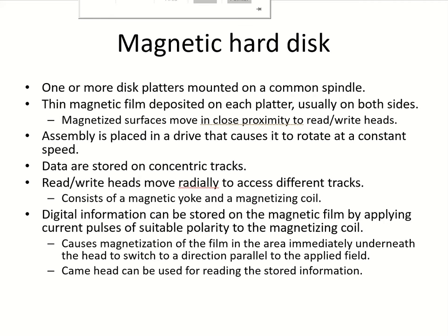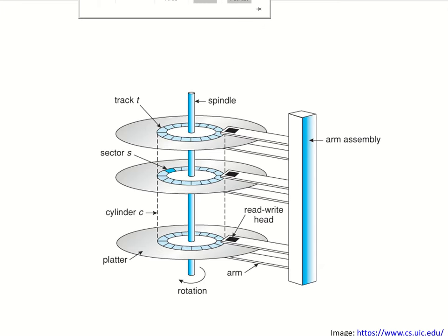The secondary storage in systems is usually implemented as a magnetic hard disk. This consists of one or more disk platters which are mounted on a common spindle. These are the platters, and they have been mounted on this spindle.